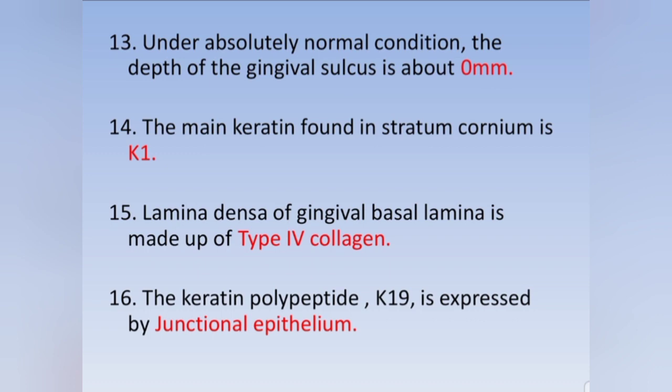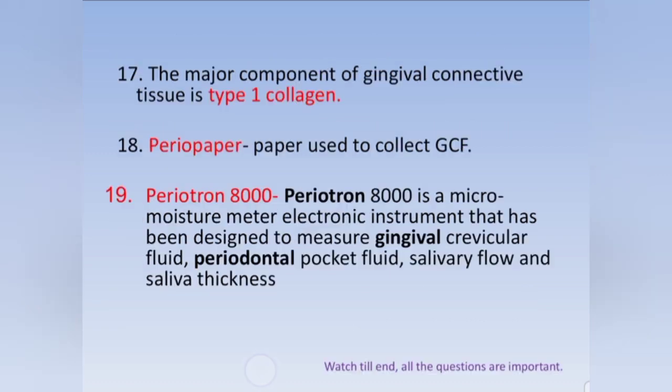The main keratin found in stratum corneum is K1. The lamina densa of the gingival basal lamina is made up of type 4 collagen. The keratin polypeptide K19 is expressed by junctional epithelium. The major component of gingival connective tissue is type 1 collagen.